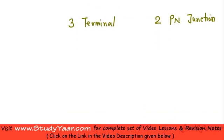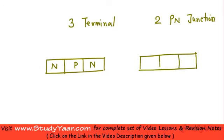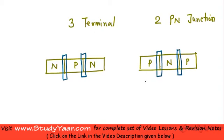Let's understand what this means. This is a NPN transistor which has a N region, a P region, and a N region. And over here you have a PNP transistor which has a P region, a N region, and another P region. You have two PN junctions in each of these.